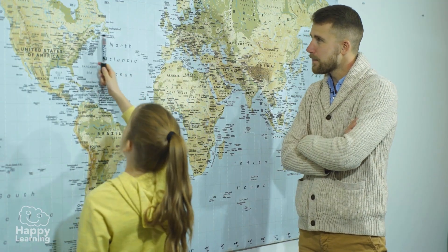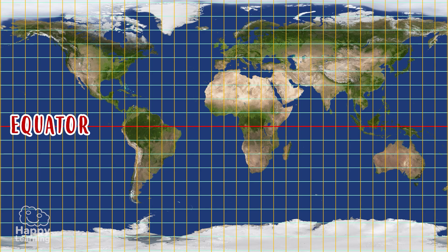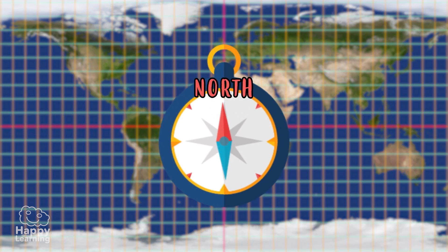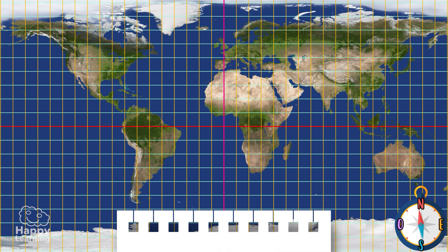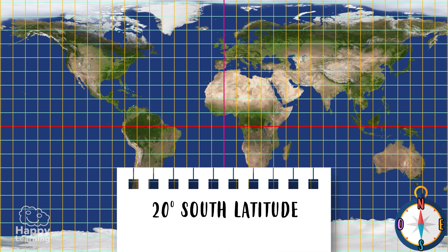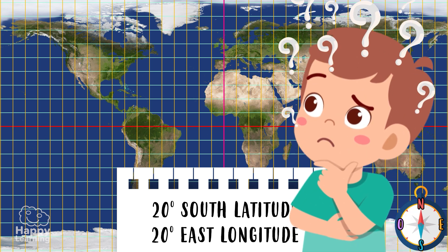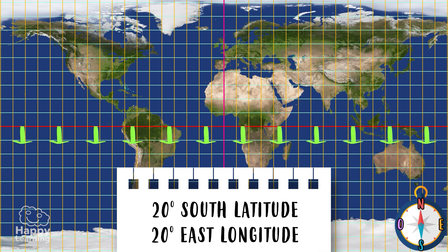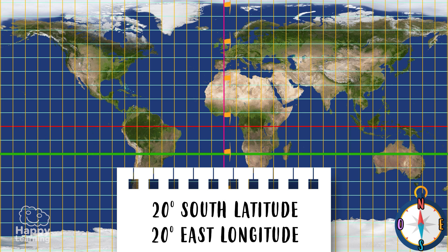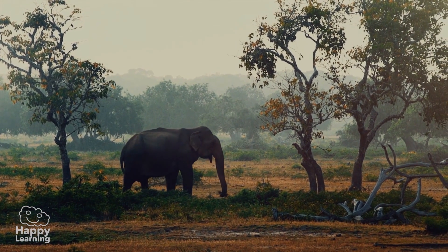Let's try it! This here is the equator, and this here is the Greenwich meridian, so this is north, this is south, this is east, and this is west. Now let's say we're at 20 degrees south latitude and 20 degrees east longitude. Where are we? Let's see: 10, 20 south latitude — here. 10, 20 degrees longitude — here. We're in Africa! Maybe we'll see some lions. How exciting!